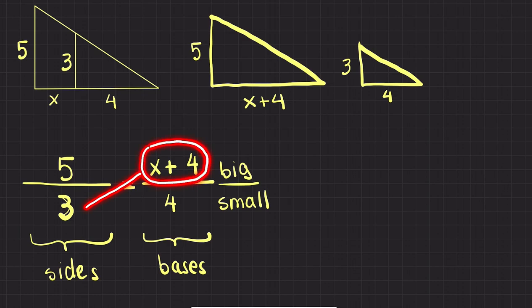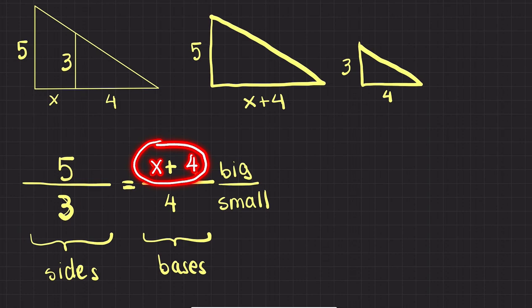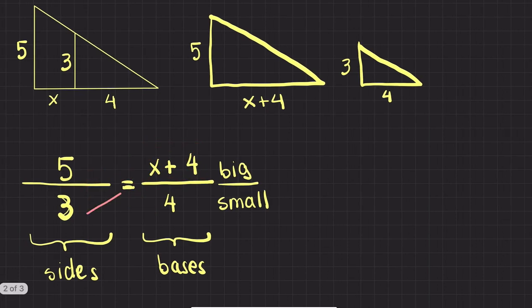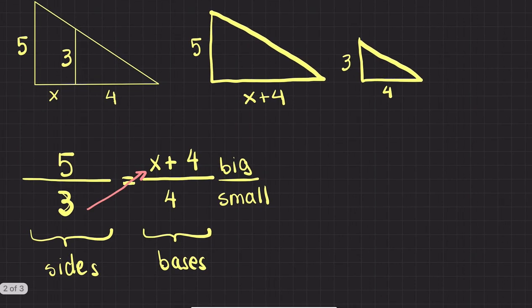I need to multiply three times all of X plus four — I'll use parentheses so the three multiplies not only the X but also the four. That should be equal to four times five. So: three times (X plus four) equals four times five, which is 20.